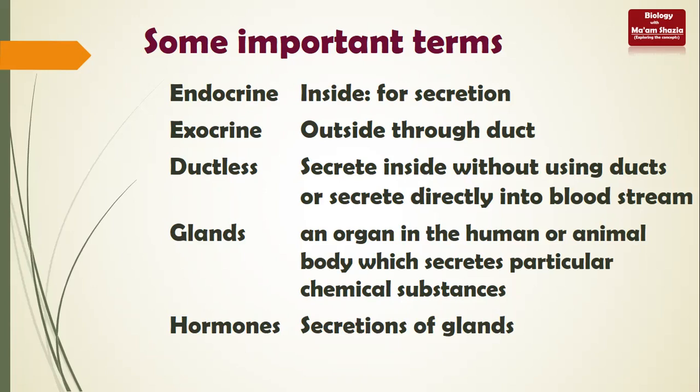Exocrine means that when secretions go out, they go through targeted routes via ducts. But in endocrine, there is no duct - secretions are put directly into the blood. Then it depends on the blood to carry them to the target area. So endocrine means secretion inside without using ducts - secreted directly into the bloodstream.